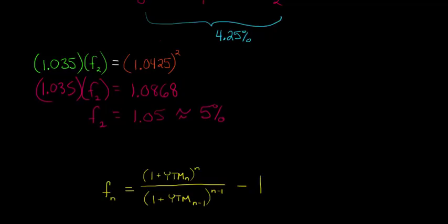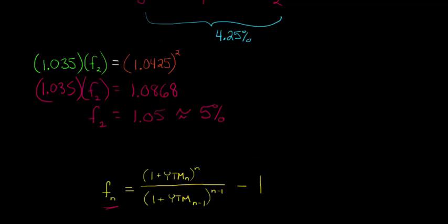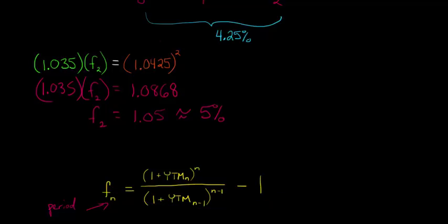Now you might ask: how can we generalize this to multiple periods? We have a formula for the forward rate for any year n — where the subscript n is just the period we're talking about, like forward rate for year two or year three. We also use YTM here — yield to maturity — which is just the yield on a zero coupon bond. So YTM₂ would be the yield on the two-year zero coupon bond, and so on.